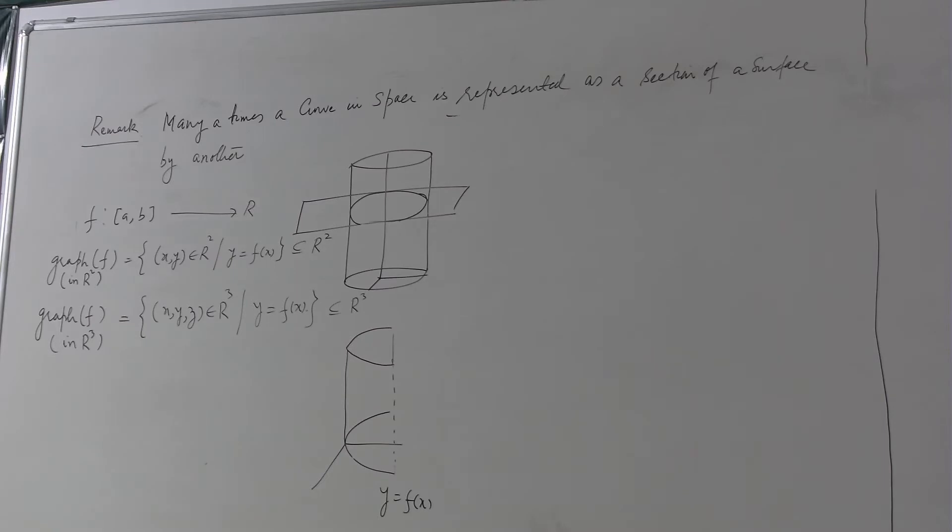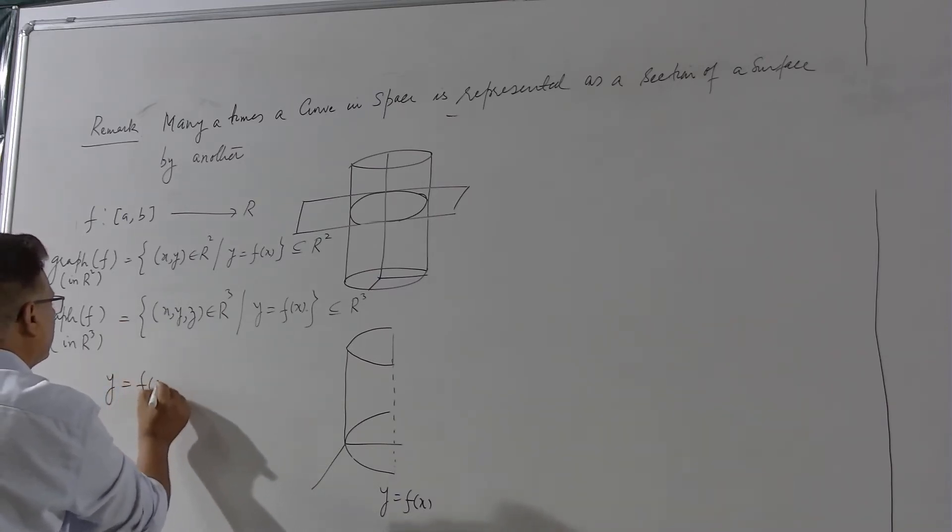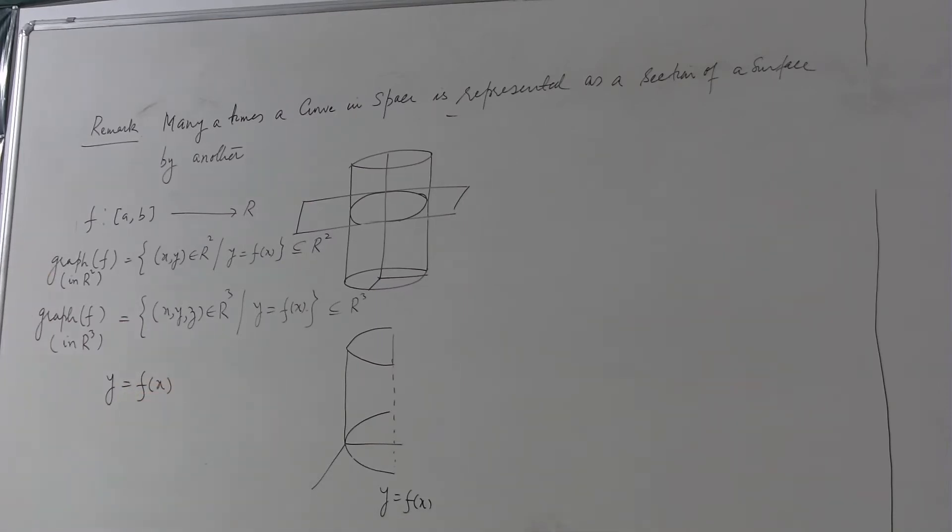So you will be getting a cylindrical shape like this. So this cylinder is the surface which is in fact the graph of the function y equal to f(x) in R³. So if you find something written like this y equal to f(x), then you immediately should realize that this is a surface in R³.